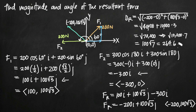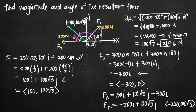So the magnitude of our resultant force is approximately 264.6 newtons. Now we need to find the angle between the resultant force and the positive direction of the x-axis. We know our terminal point is (−200, 100√3), so we can draw a right triangle and identify the angle theta in the second quadrant. The opposite side has length 100√3 and the adjacent side has length 200.